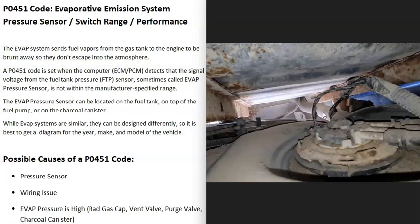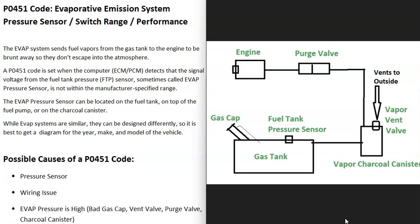The next possible cause is some kind of issue going on inside the evap system that's causing the pressure to be really high, or causing pressure loss so it's really low, or just something off with the pressure. If that happens, another component inside the evap system has failed, causing the pressure to be off and triggering the pressure sensor. This could be something like a stuck-closed vent valve that's not opening and shutting, or a bad gas cap — the gas cap is part of the evap system and needs to seal correctly, or it can cause leaks.